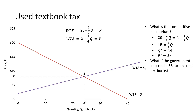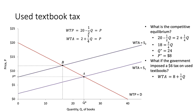Now suppose the government imposes a $6 tax on used textbooks. We apply this to the willingness to accept function — whereas we started with 2 plus one-fourth times Q, we now have 8 plus one-fourth times Q. Then we set this equation equal to our willingness to pay function to find the new equilibrium price and quantity. Solving for Q we get a new Q* of 16, and plugging back in we find P* equal to 12. Following this $6 tax, the equilibrium quantity has fallen and the equilibrium price has increased.